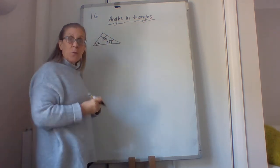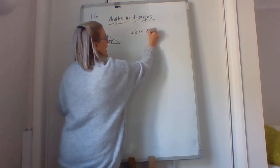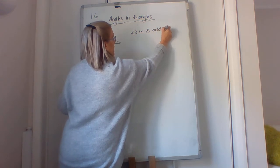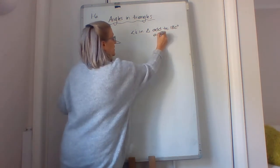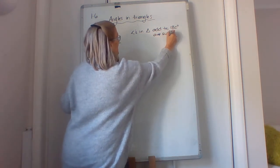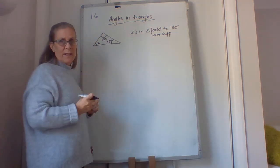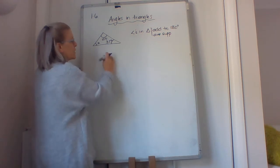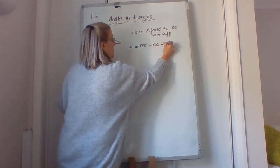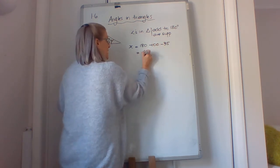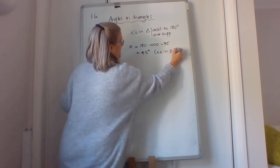We use what rule? That's right, angles in a triangle add to 180. What's the other thing for add to 180? Supplementary. So you can write either one of those, doesn't really matter. Sometimes it's better to stick to the add to 180 because then you know the 180. So what we got here, we've got x equals 180 minus 100 minus 35, leaves us with 45 degrees.